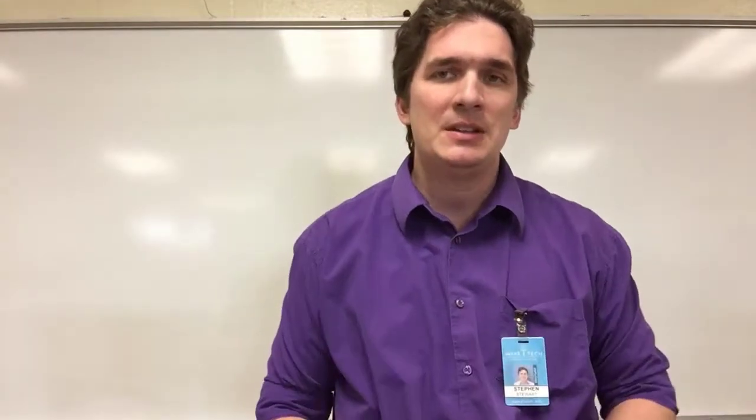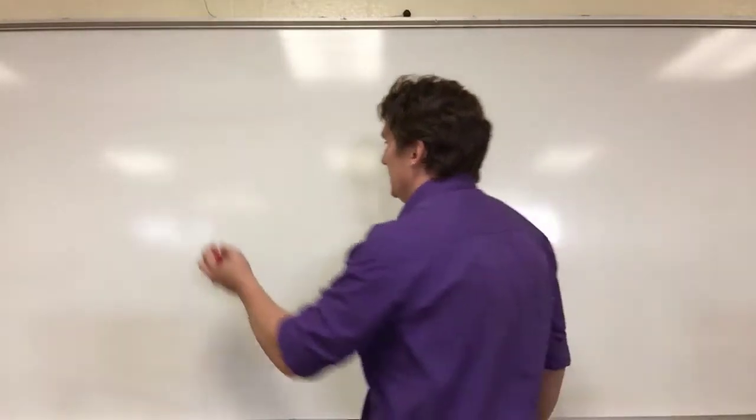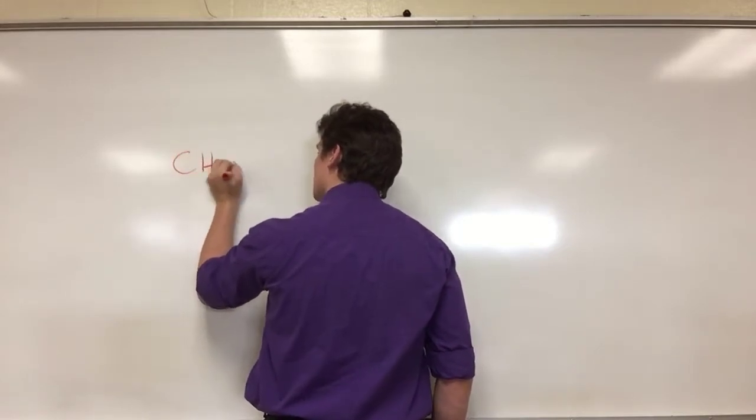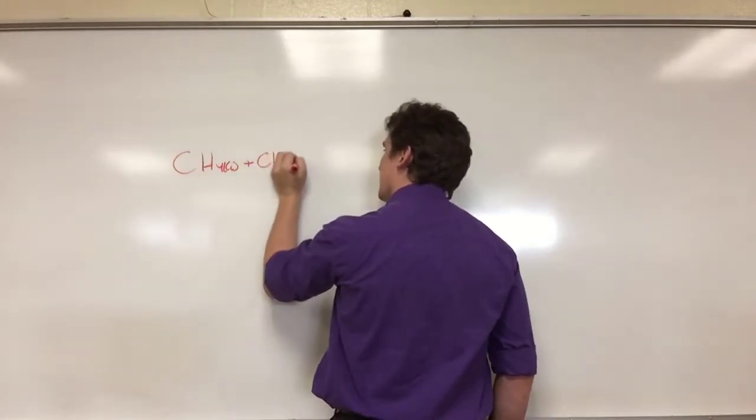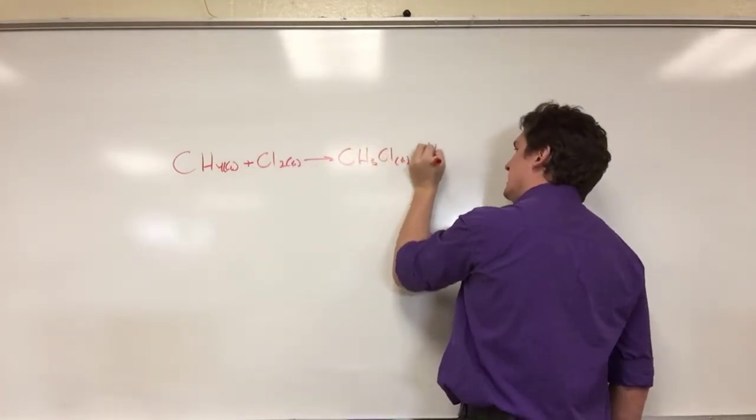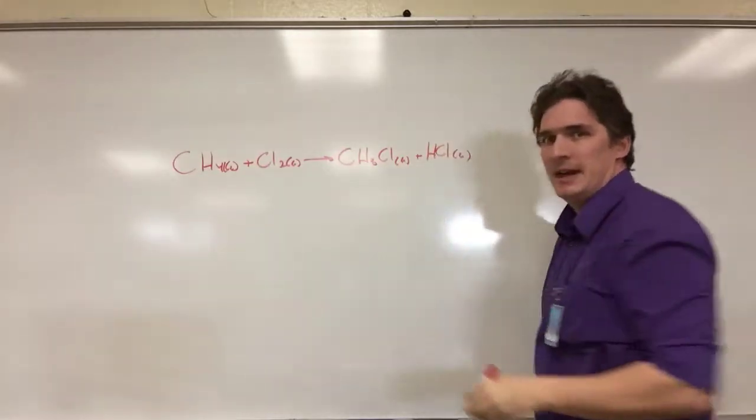So this third method just basically says write out Hess's law for the reaction and use tabulated values to figure out the actual heat of formation. So the reaction we're going to look at is CH4 gas plus Cl2 gas goes to CH3Cl gas and HCl gas.